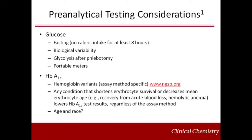Some important variables that may influence the results of bedside glucose monitoring include changes in hematocrit, altitude, environmental temperature or humidity, hypotension, hypoxia, and high triglyceride concentration, as well as various drugs. Furthermore, most glucose meters are inaccurate at very high or very low glucose concentrations. Another important factor is variation in results among different glucose meters.